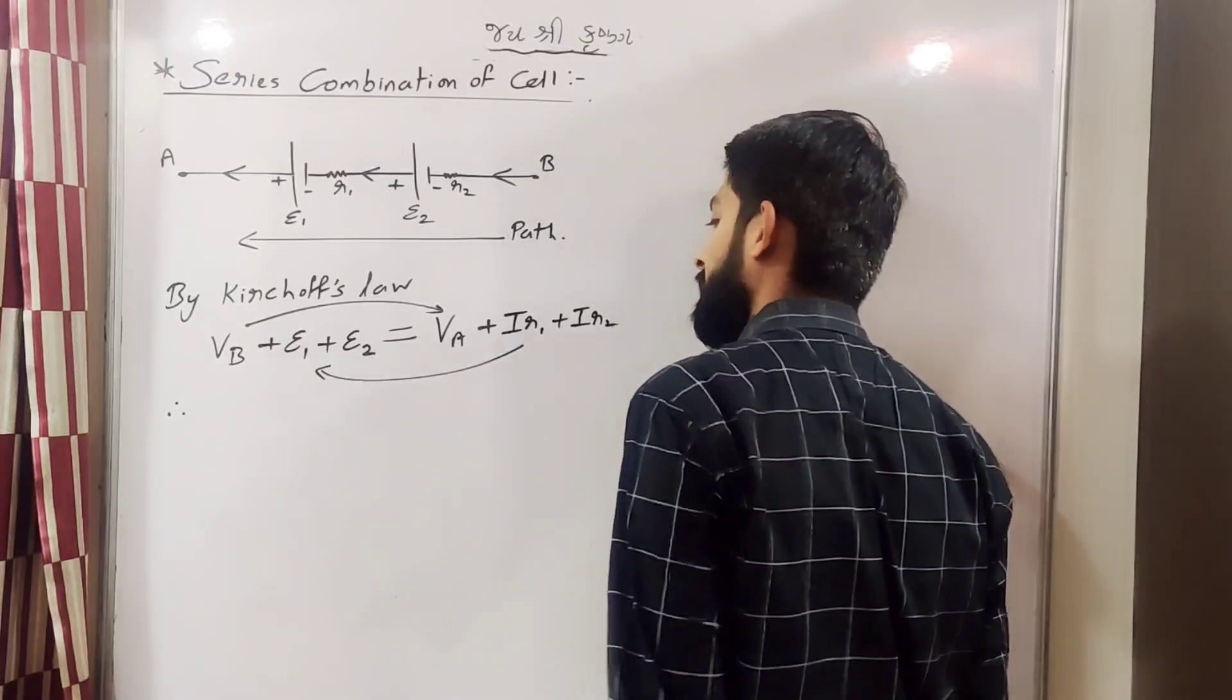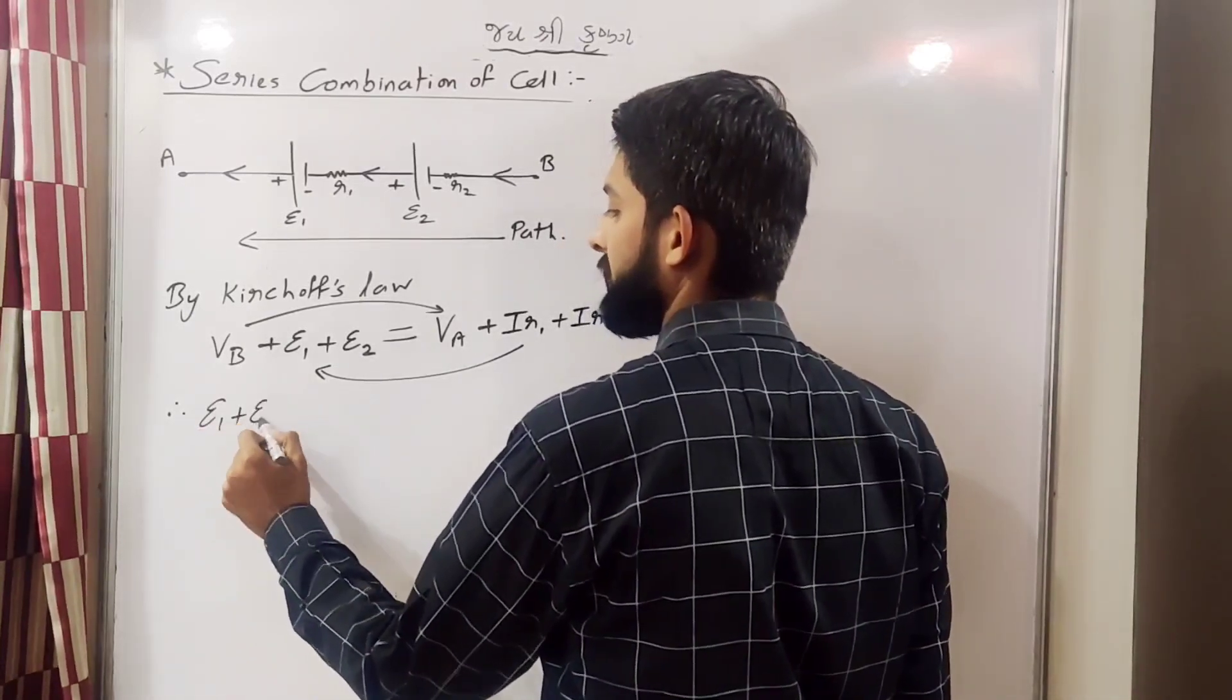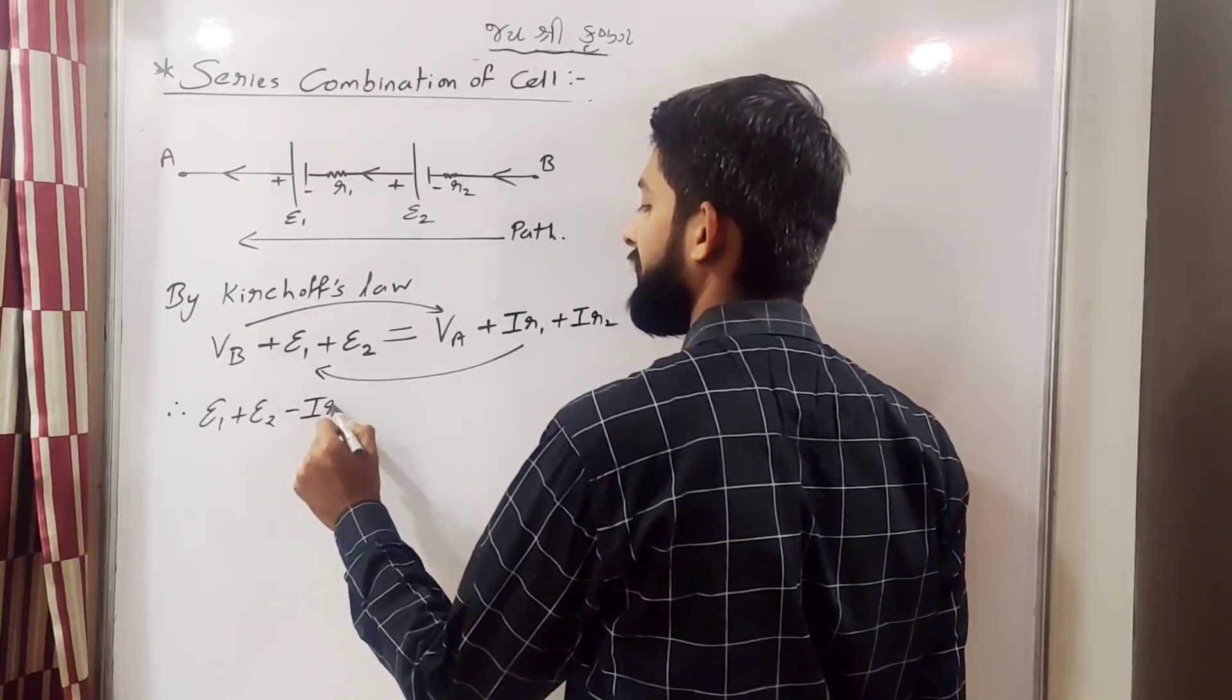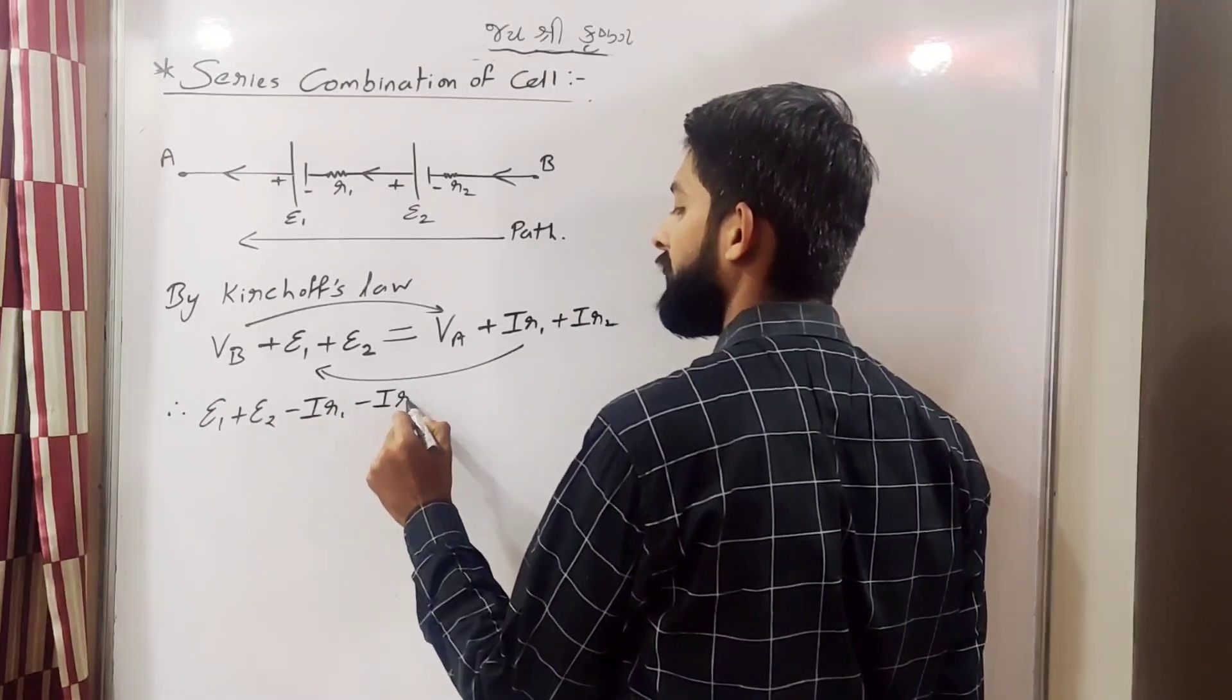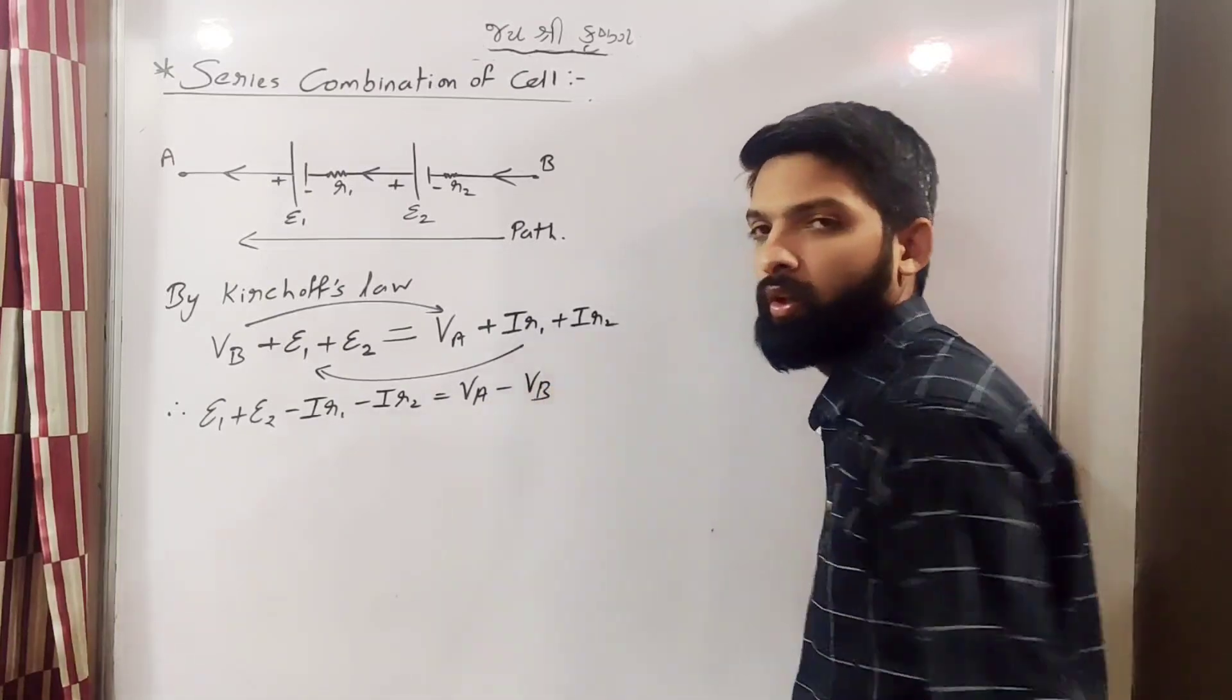So therefore epsilon 1 plus epsilon 2 minus IR1 minus IR2 is equal to VA minus VB. So VA minus VB is potential difference.